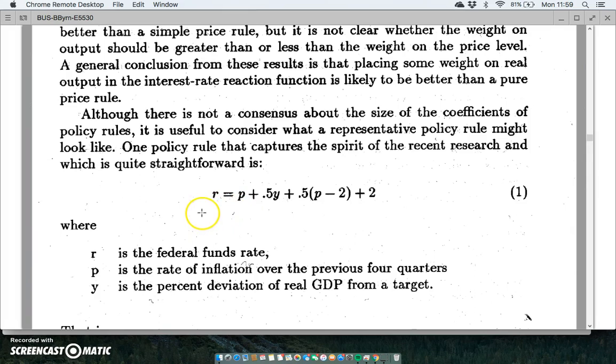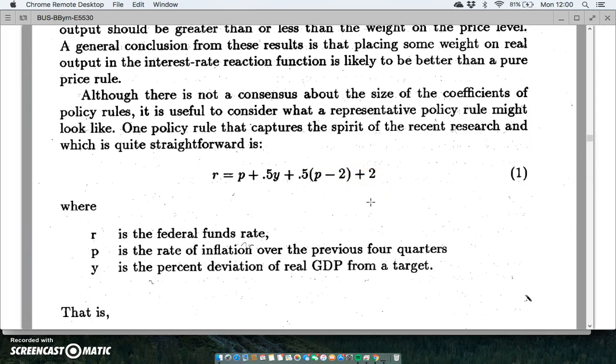As a kind of intermediate target policy, we set out the interest rate in terms of inflation and 0.5 times an output gap estimate, and then 0.5 times p minus 2. So if you like, the inflation rate minus the target, and then this 2 here is like an equilibrium interest rate in the overall process.